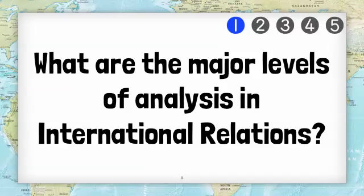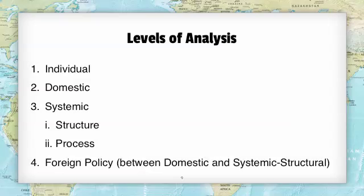We can extend this and look at levels of analysis more in the context of international relations. What are the major levels of analysis within this discipline? There are basically four that your textbook goes into some detail about. In your readings you will largely focus on the top three: the individual, the domestic, and the systemic. On occasion we will want to distinguish between a structural or a process-oriented explanation. Let's go into some detail about these.